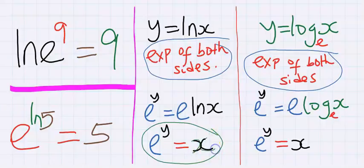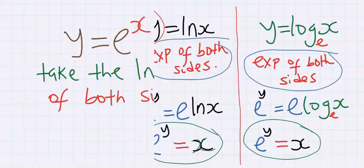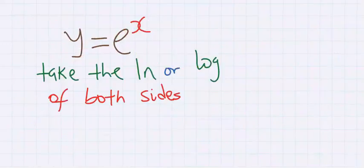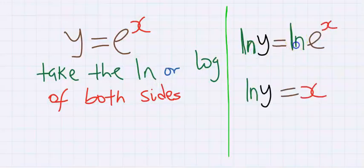Also, make x the subject. We need to take the ln or log of both sides. And when we do this, by taking ln of both sides, x is now the subject.